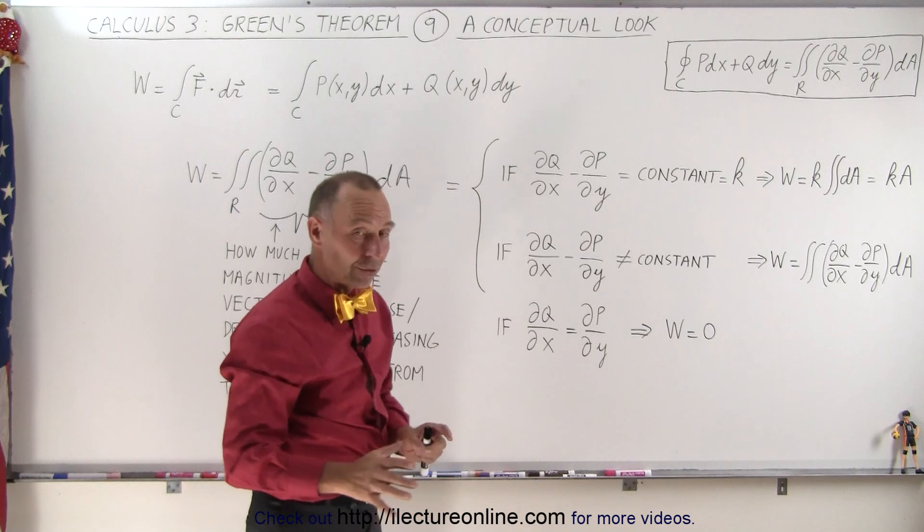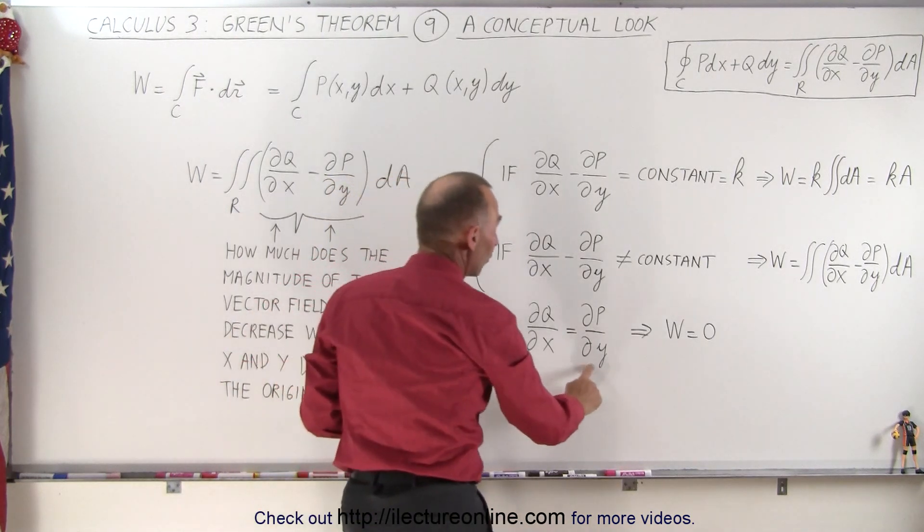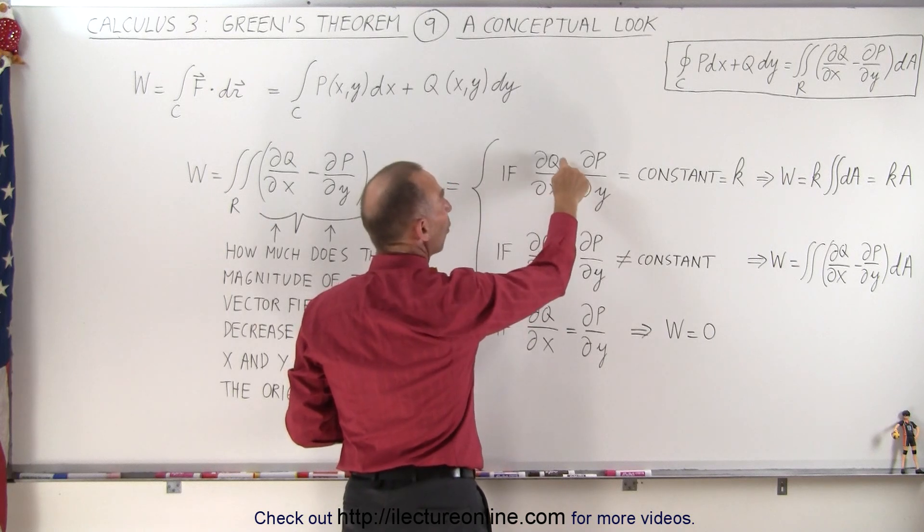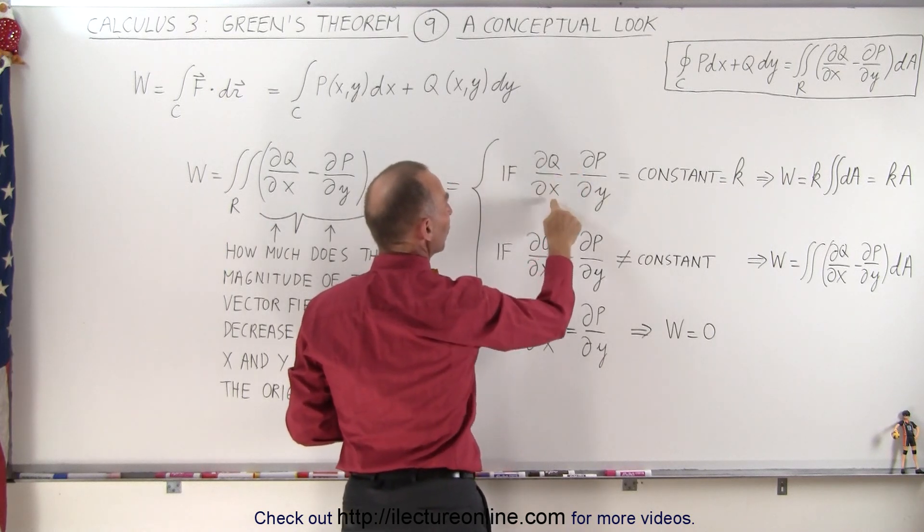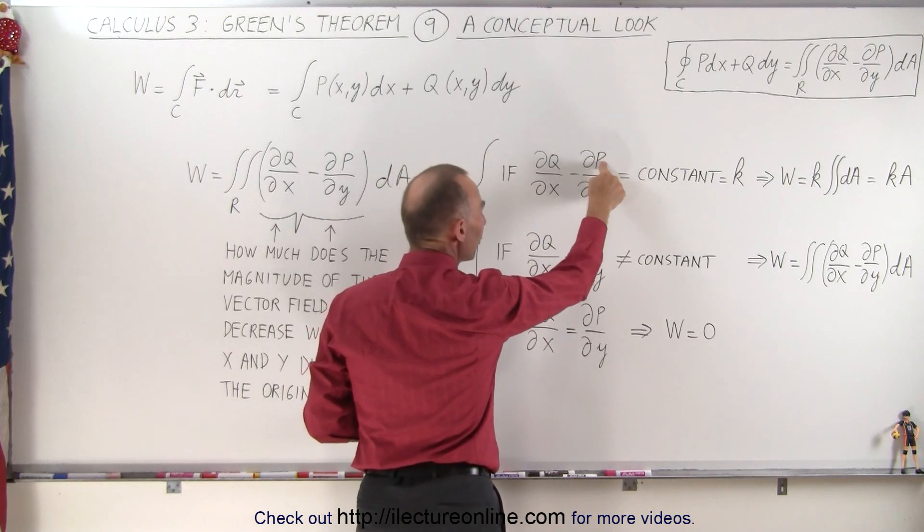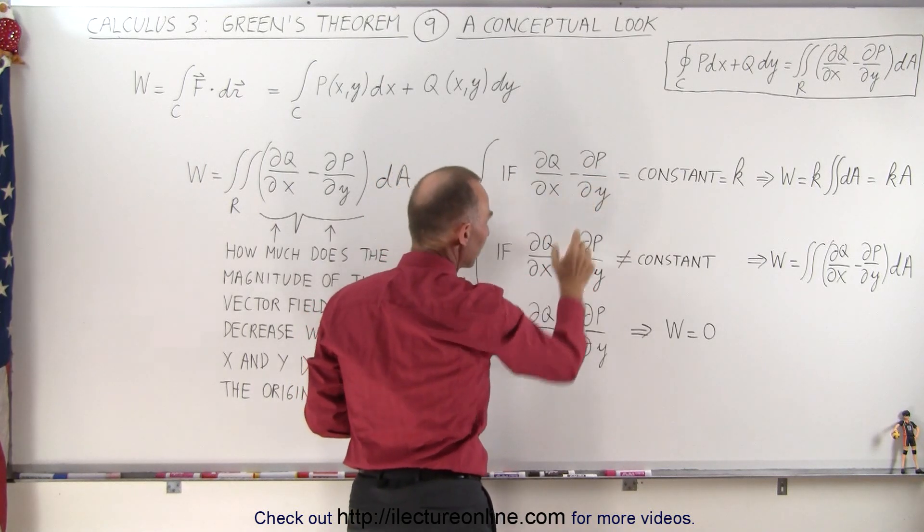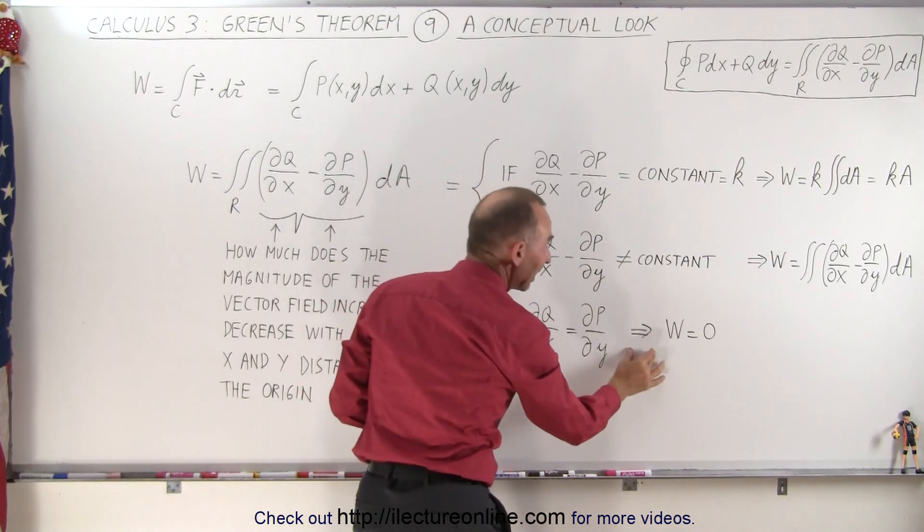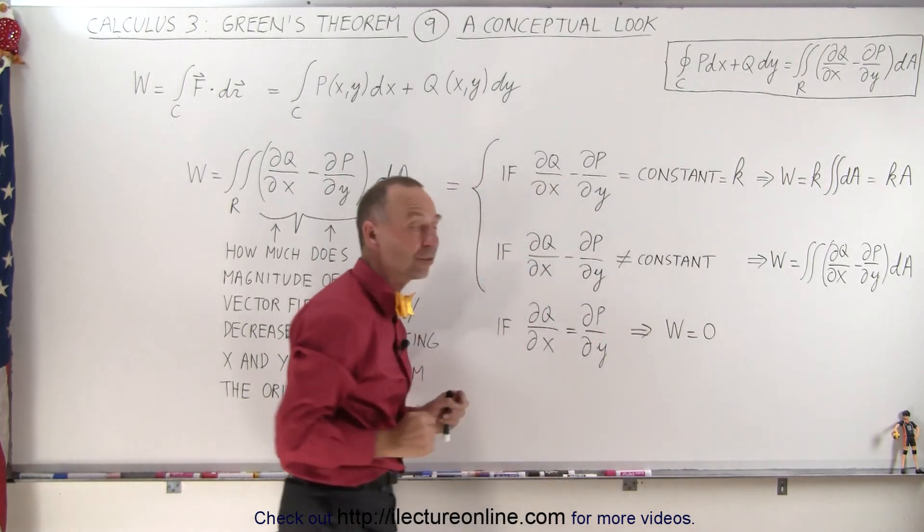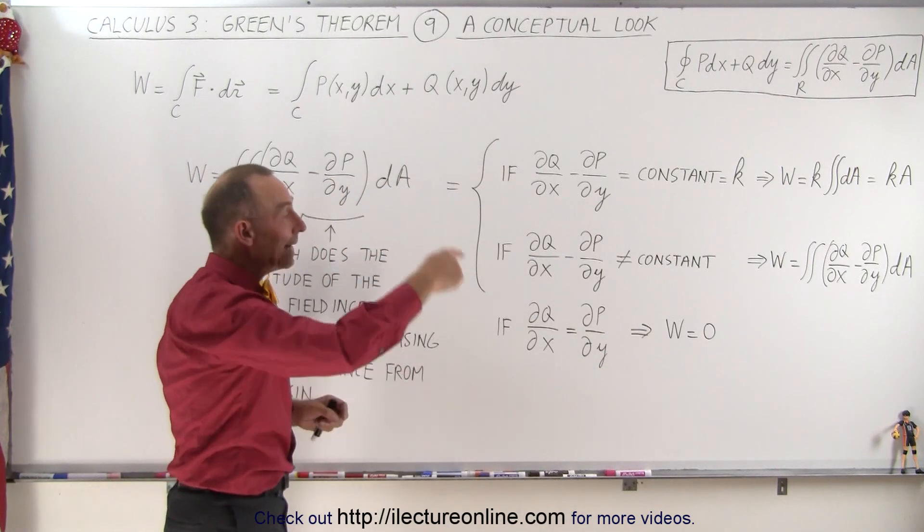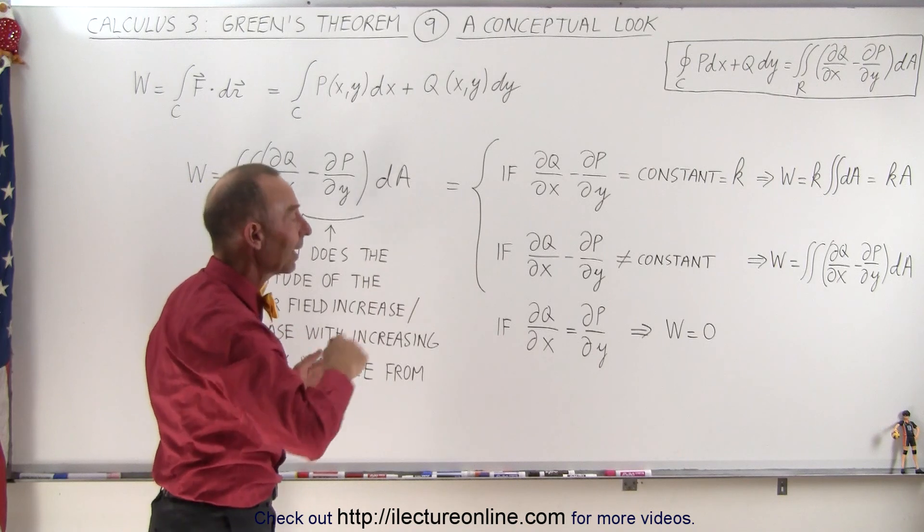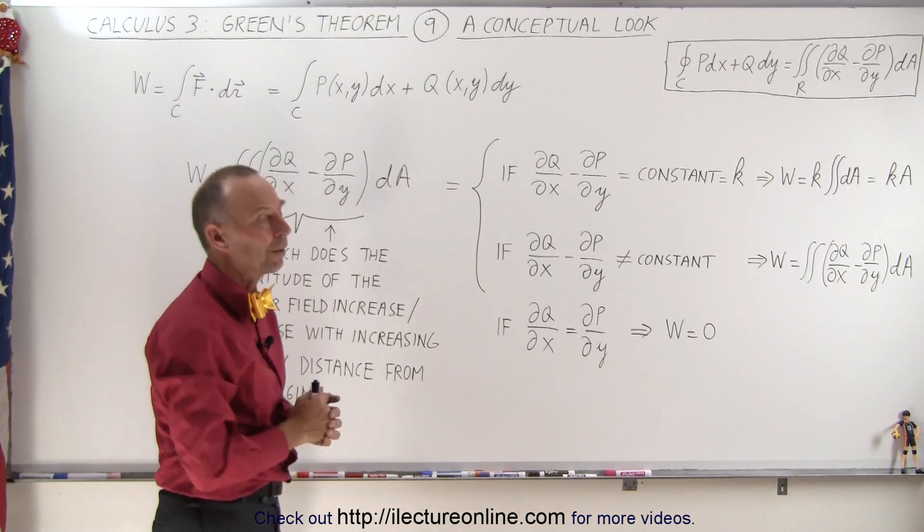And if these two components are equal to each other - if the change of the y component with respect to x equals the change of the x component with respect to y - then we can say the work done equals zero. Moving in a complete path along that vector field, we end up with work done equal to zero.